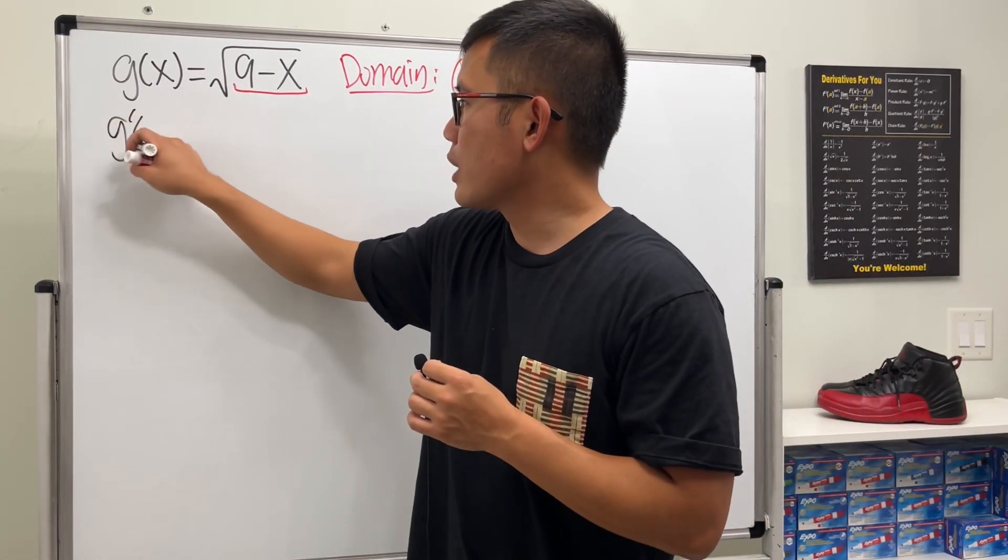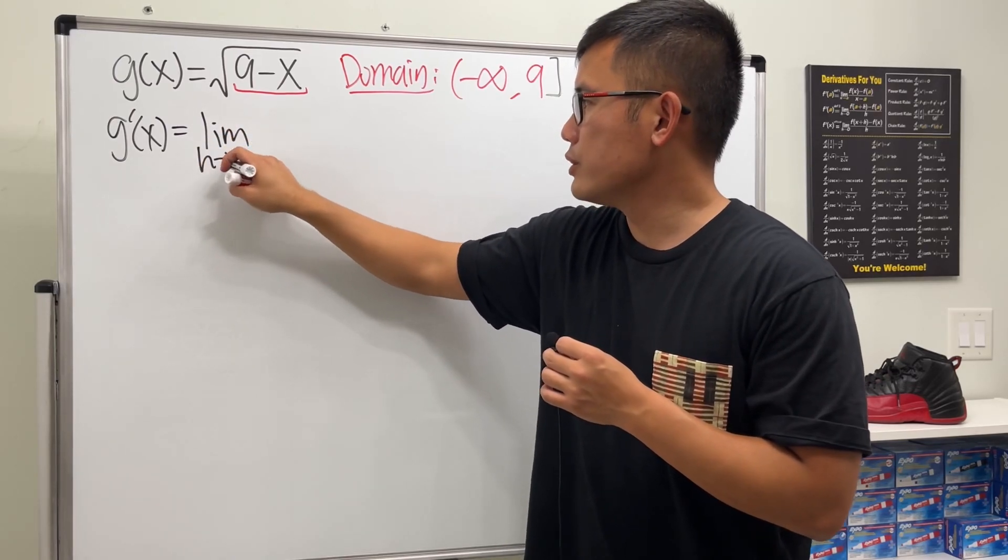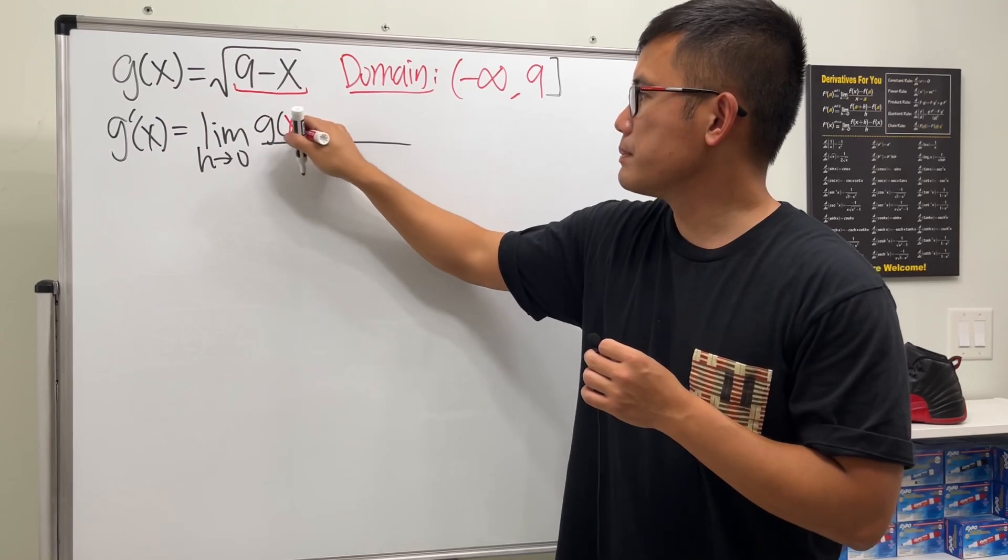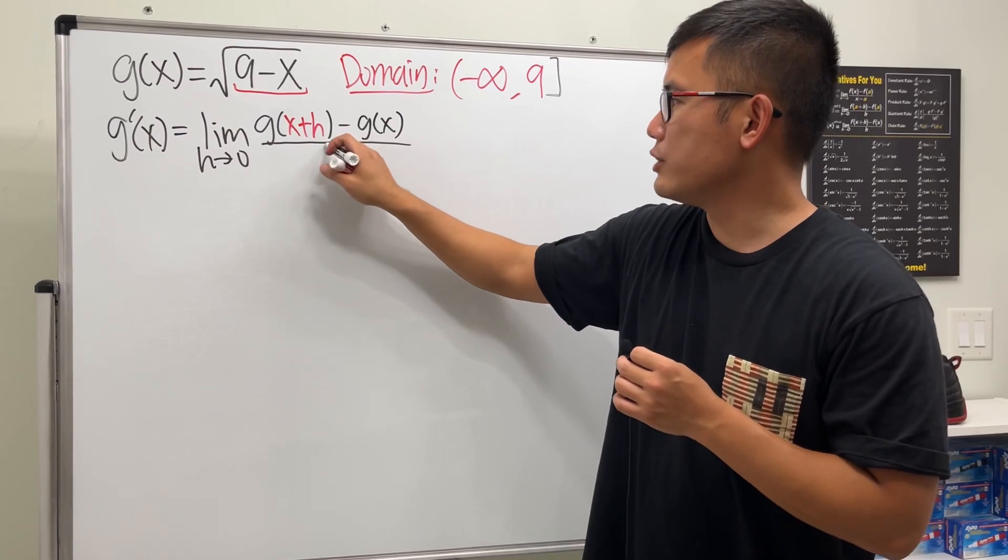Now, derivative time. So g prime of x is the limit as h approaching 0, and then we have g of x plus h, and then minus g of x, and then divided by h.